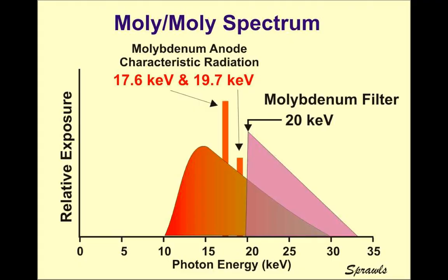Now I want to start talking about what filters we have in mammography. Mammography is a little bit different — we're dealing with lower energies around 20 to 25 keV. We use different combinations, so when you see a molybdenum-molybdenum spectrum, that means we have a molybdenum target and a molybdenum filter. The same material used for the target also works very well as a filter in mammography.